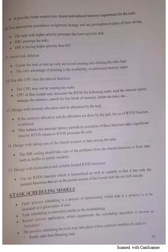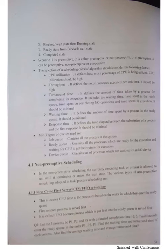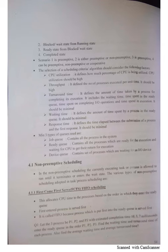There are certain steps involved while a task is being executed by a real-time operating system: ready state, running state, blocked or wait state from running state, ready state from block or wait state, then completed state. Each of these states can be classified as preemptive, non-preemptive, or cooperative. The term preemptive means the task has only limited access to the CPU — the CPU will be allocated for only a limited amount of time.